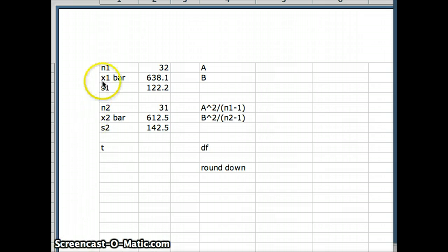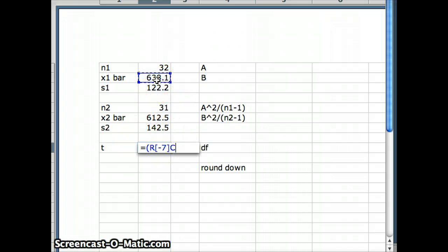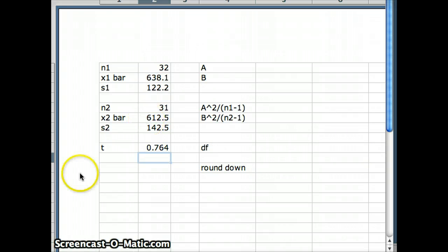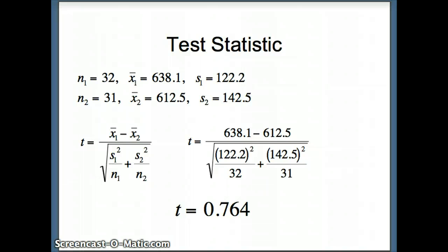I put in some headers and the statistics that we have. We're going to compute the test statistic t, which will be x1 bar minus x2 bar divided by the square root of s1 squared over n1 plus s2 squared over n2. The test statistic t that comes back is 0.764, which does not seem like a very extreme t statistic, so that indicates to us the direction this is probably going to go.